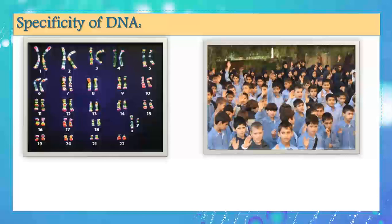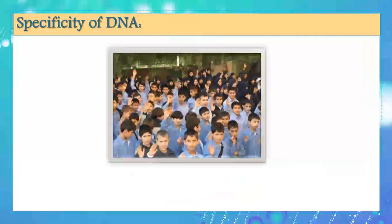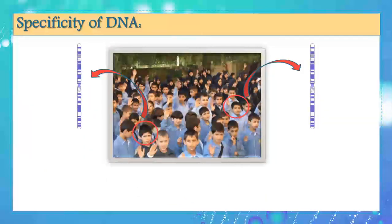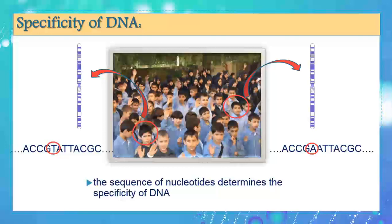Concerning the specificity of DNA: all humans have 23 pairs of chromosomes, yet each individual is very different. If we study one type of chromosome in two individuals and look at the sequence of nucleotides, we find they are similar but may differ in only one nucleotide. That single change can make those two individuals very different. So the sequence of nucleotides determines the specificity of DNA — we are different not because of different chromosomes, but because of different nucleotide sequences.